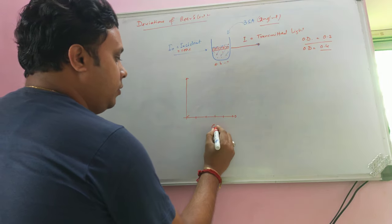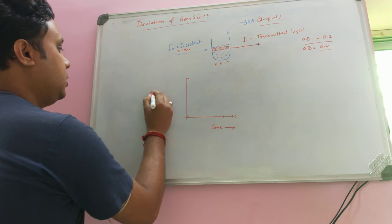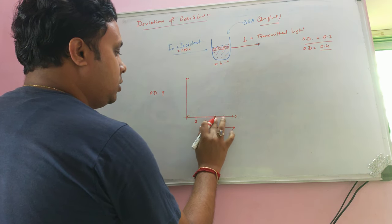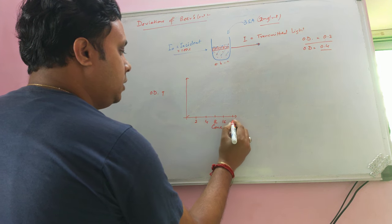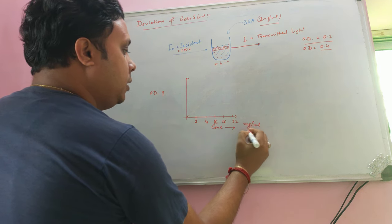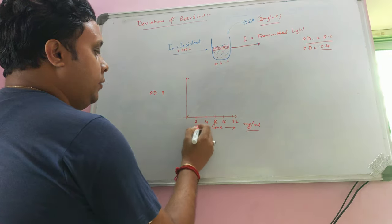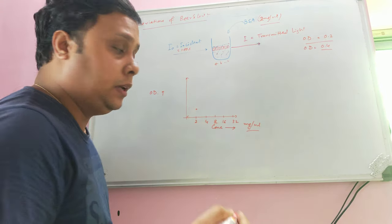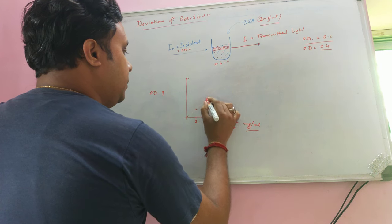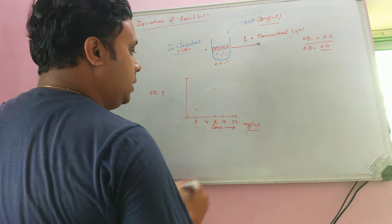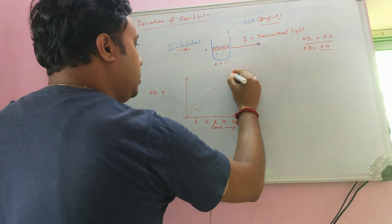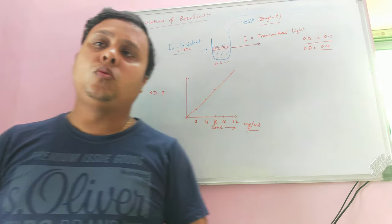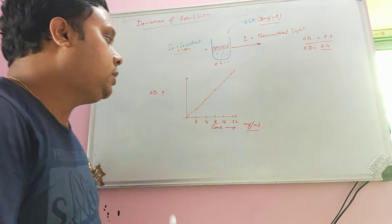If we plot concentration on the x-axis and absorbance on the y-axis, and increase concentration from 2 mg to 4 mg, 8 mg, 16 mg, and 32 mg per mL, Beer's Law predicts a perfectly straight line — doubling concentration doubles the OD. However, in practical aspects, when you plot OD against concentration, you can get either a positive deviation or a negative deviation.